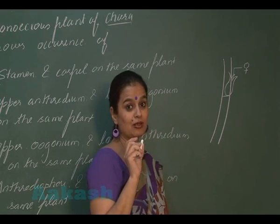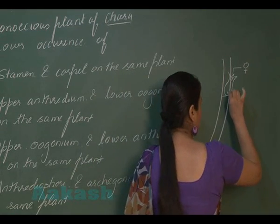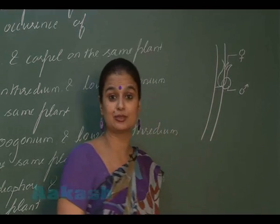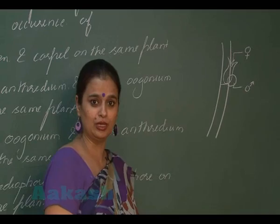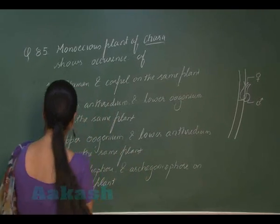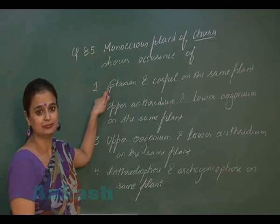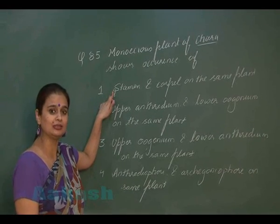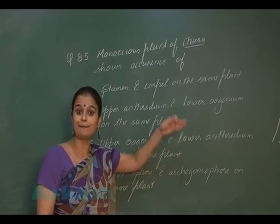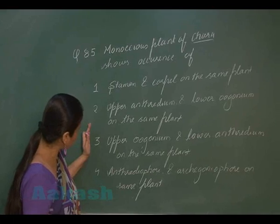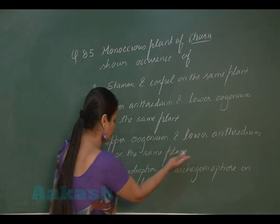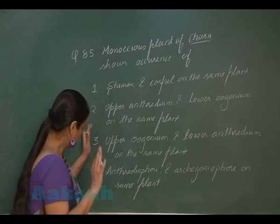The flask-shaped female sex organ is known as oogonium. In Chara, male and female sex organs are present on the same body. Looking at the options: stamen and carpel are in angiosperms, so that's not right. The correct option is that the upper structure is oogonium (female sex organ) and the lower is antheridium (male sex organ) on the same body.